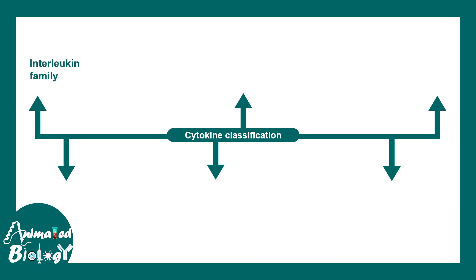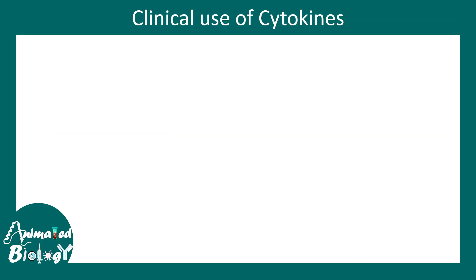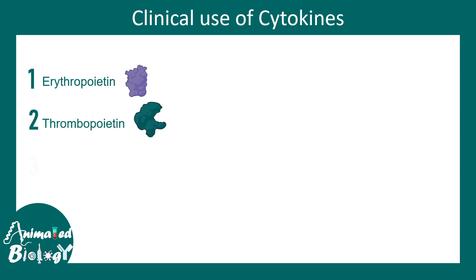Cytokines have different families. Among them, the most important families are: the interleukin family, hematopoietin family, interferon family, tumor necrosis factor family, interleukin-17 family, and the chemokine family. First we'll talk about erythropoietin, then thrombopoietin, and lastly colony stimulating factors. These three cytokines are very important when it comes to clinical usage.